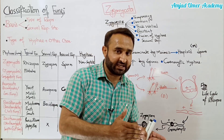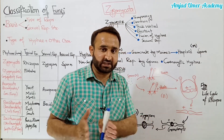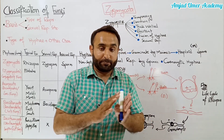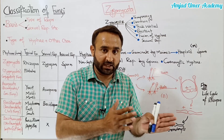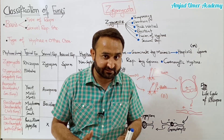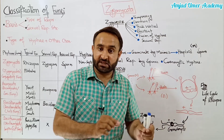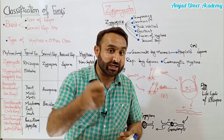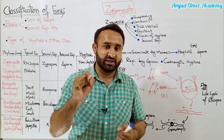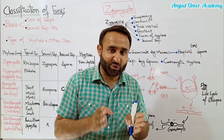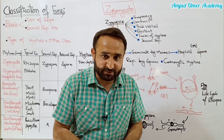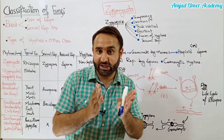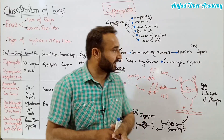Ek positive strain hota hai aur ek negative strain hota hai - male aur female nahi kehte kyon ke appearance mein in mein farq nahi kiya ja sakta. Bas ye ek doosre ke kareeb aate hain aur conjugate karte hain. Agar ye conjugate kar lein, to iska matlab hai ke genetic variability hai; warna agar same strain hain to conjugation nahi hoti - doosre strains kehlate hain.